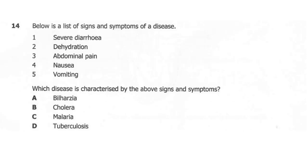Question 14. Below is a list of signs and symptoms of a disease: 1. Severe diarrhea. 2. Dehydration. 3. Abdominal pains. 4. Nausea. 5. Vomiting. Which disease is characterized by the above signs and symptoms? A: bilharzia. B: cholera. C: malaria. D: tuberculosis. So what is the correct answer? Is it A, B, C, or D?